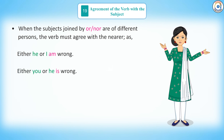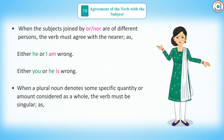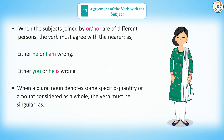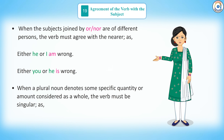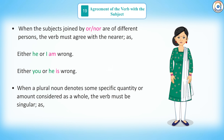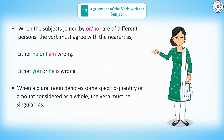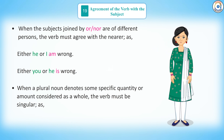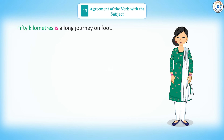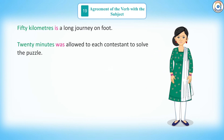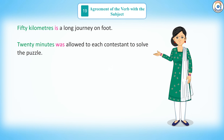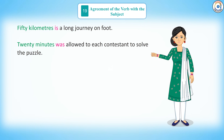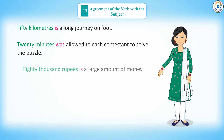Rule 10: when a plural noun denotes some specific quantity or amount considered as a whole, the verb must be singular — as in, 50 kilometers is a long journey on foot; 20 minutes was allowed to each contestant to solve the puzzle.